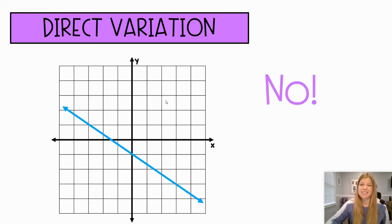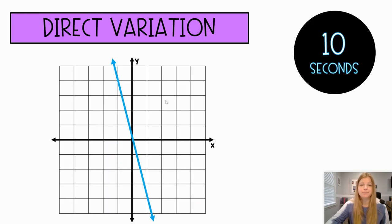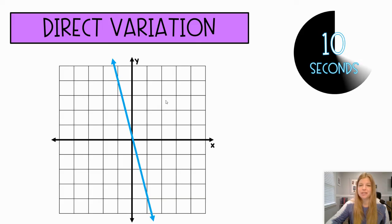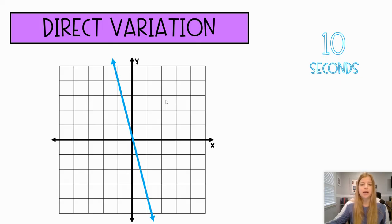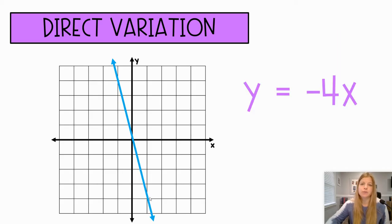For the next three, if it is a direct variation we're also going to write the equation. Is this a direct variation? We clearly see it's not — the main giveaway is it doesn't go through the origin. But this one does go through the origin, so let's write that equation. I never want anyone to feel stressed about writing the equation — just notice that if it goes through the origin, all you're finding is the slope. I'm going down four and to the right one, so my slope is negative four. It's y equals negative 4x.